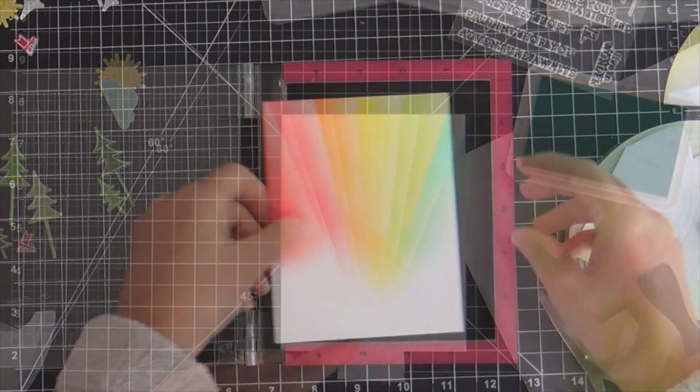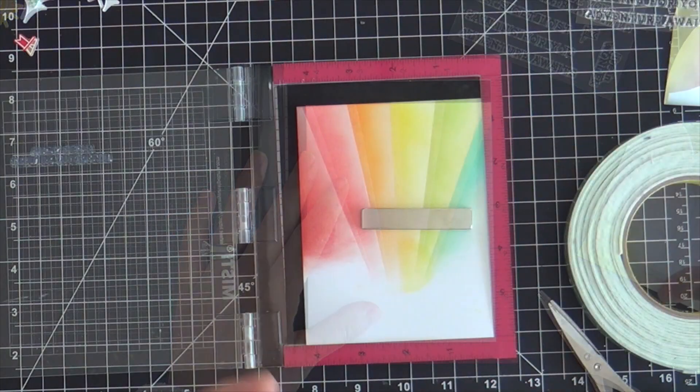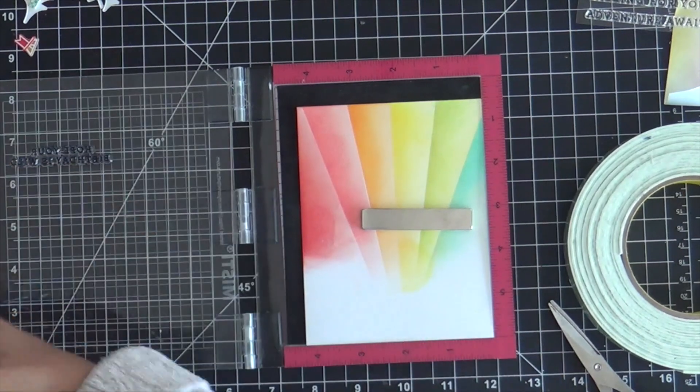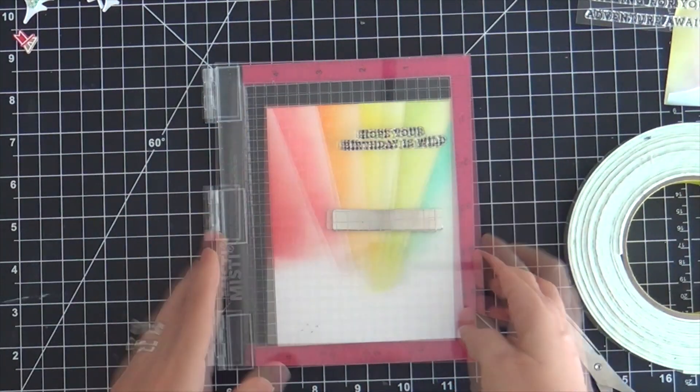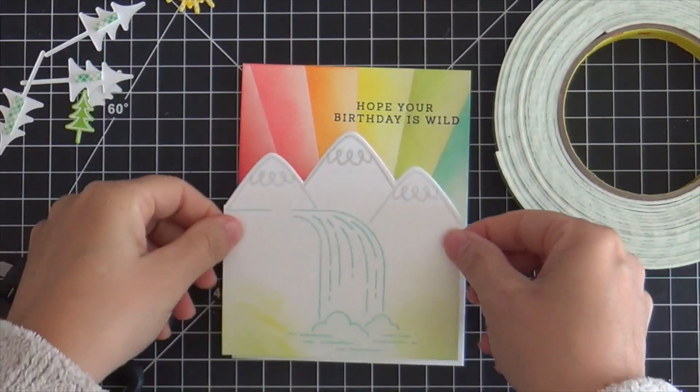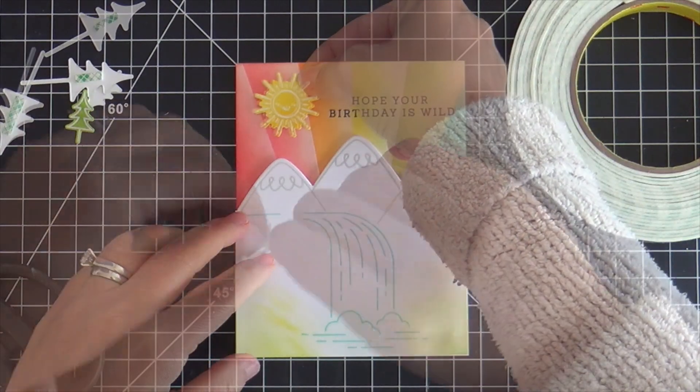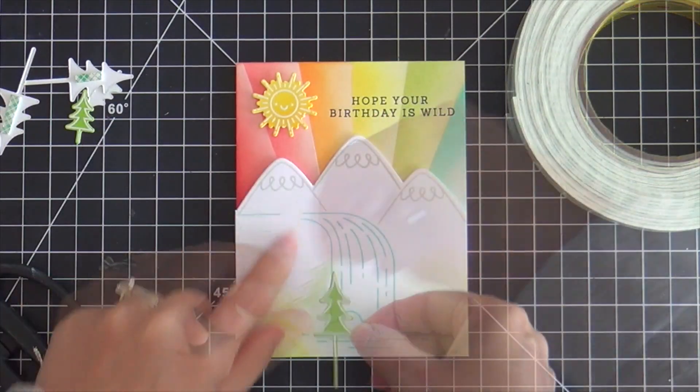Now this little background's finished. I put this in the Misti to stamp a sentiment, using VersaFine Onyx Black Ink. This sentiment is also from the Falling For You stamp set. This is a birthday sentiment, but there's several other occasional sentiments in the stamp set, so you can get mileage out of it.